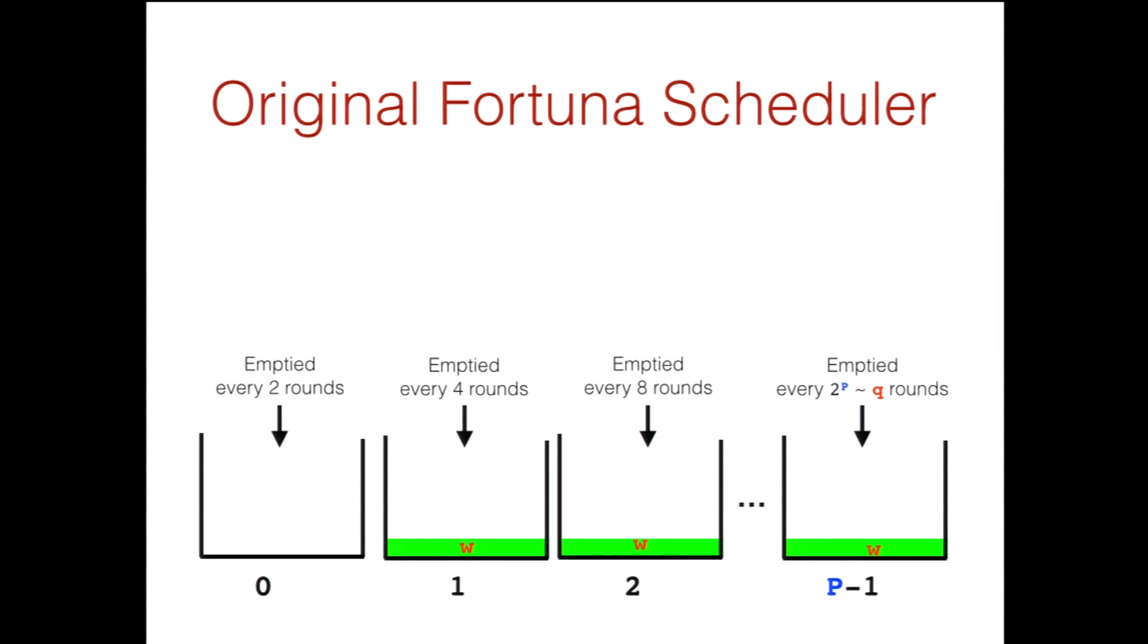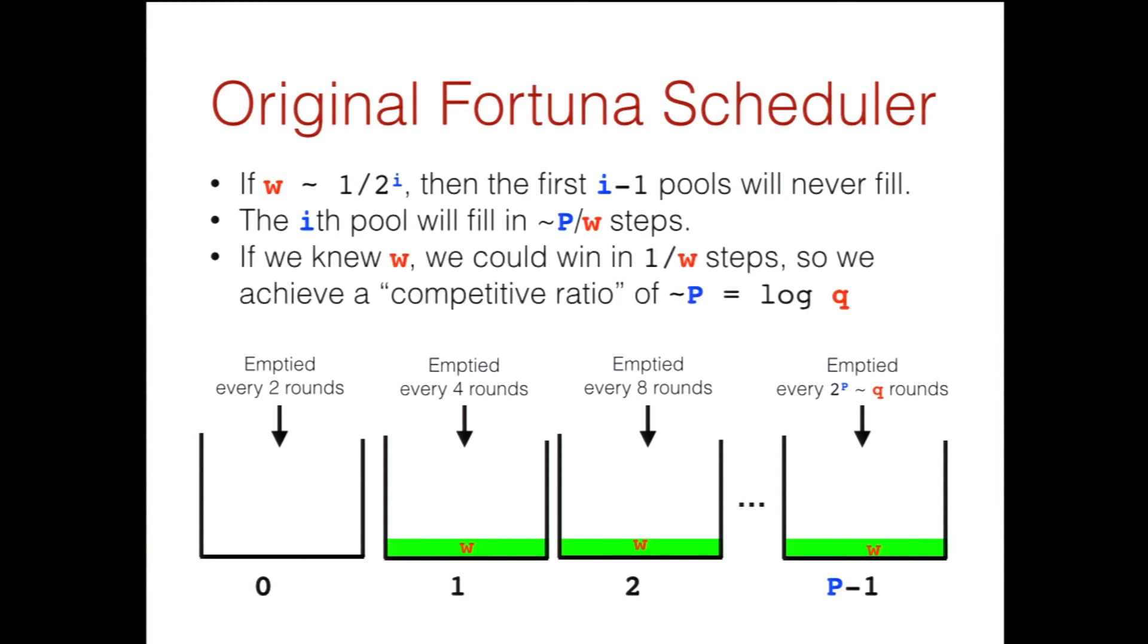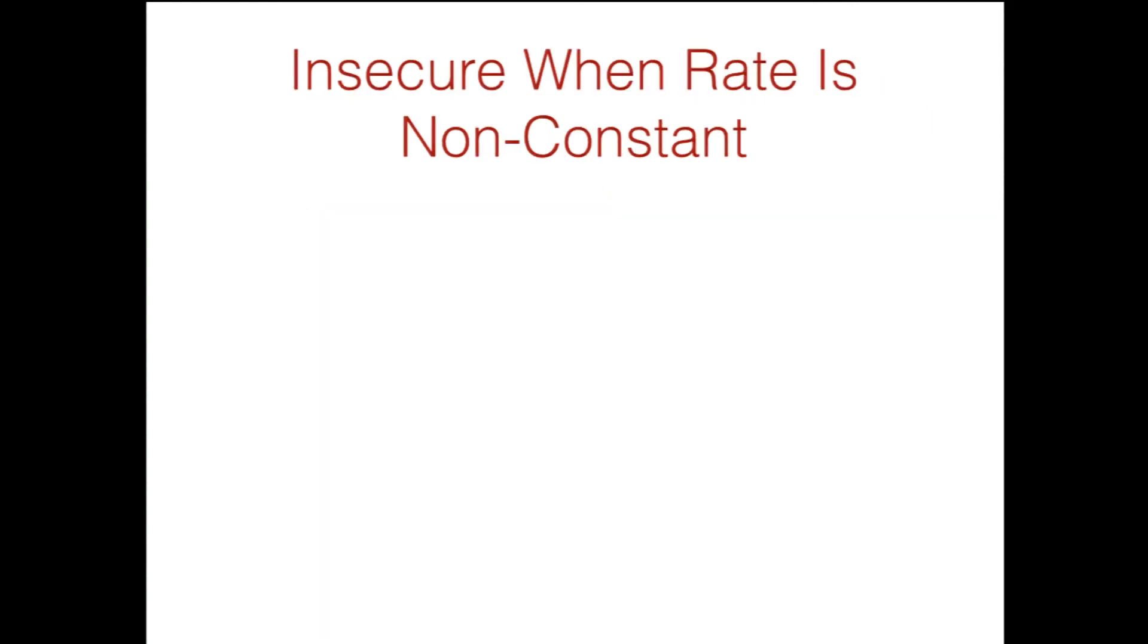So why does this make sense? The very rough idea, imagine that our weight is something like 1 over 2 to the i. Then the first i minus 1 pools will be useless. They'll all be emptied too often to fill up. But the i-th pool will fill in roughly P over W steps. Now if you think about it, since we're receiving rate W and we want a total of 1 weight, if we knew W, then we would recover in 1 over W steps. So we're losing roughly a factor of P, which we call our competitive ratio. So this is wonderful. Unfortunately, Fortuna is not secure when the rate is not constant. It wasn't designed to be so.